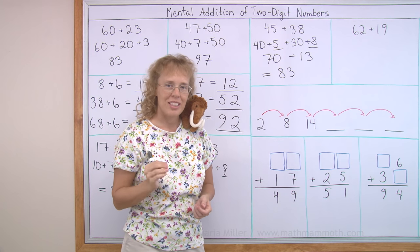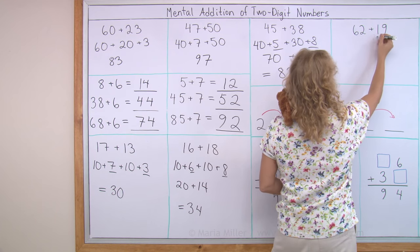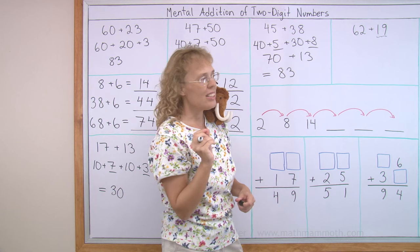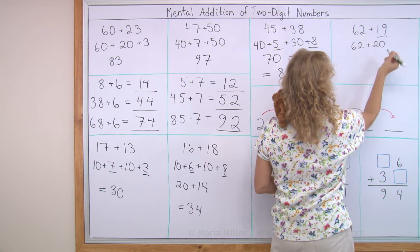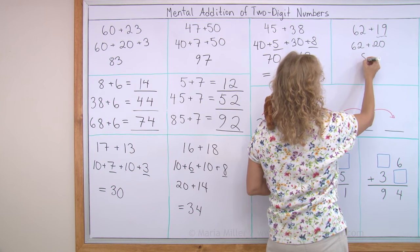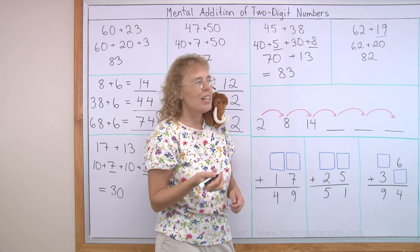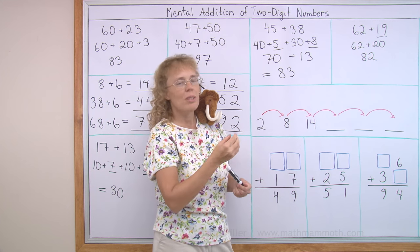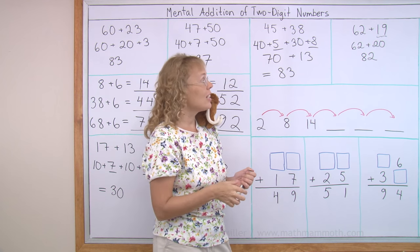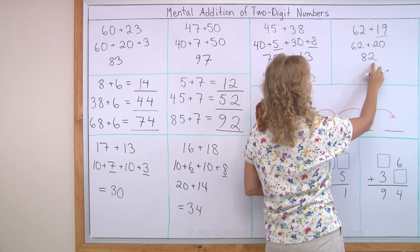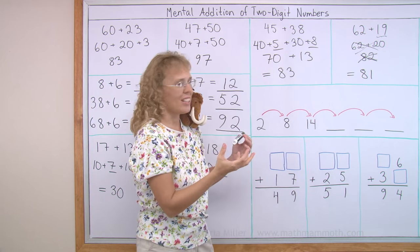The last one. You can do the same. But I'm going to show you a different way, yet one more different way. And that is that this 19, it's almost 20, right? So I'm going to add 62 plus 20 instead. And that is 82. The 60 and 20 and 2, 82. But my original problem was 62 plus 19. My original problem is one less than what I actually did. So my answer has to be one less than that. So the actual answer is 81, not 82. Those were just like helping problems.